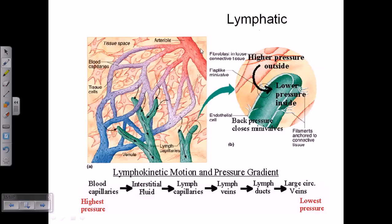Now let us talk about the lymphatic system. The lymphatic system is totally different from the blood circulation system — blood is not circulating in it. Lymph is a different thing from blood; red blood cells are excluded. Lymph contains blood serum plus B cells and T cells. Lymph is transported via lymph capillaries, which then meet into larger gland-like structures called lymph nodes.